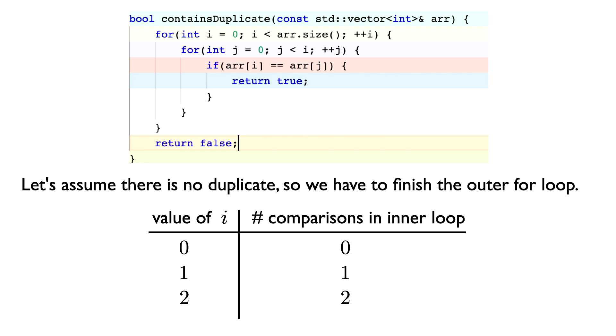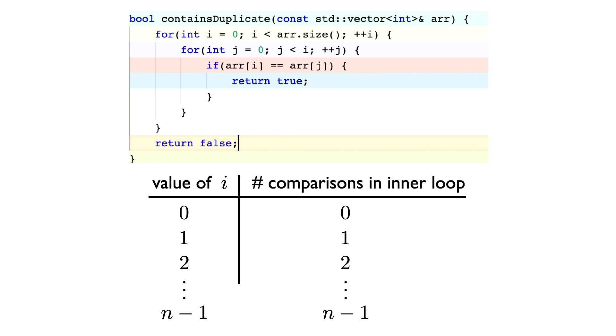When i is 1, we just do one comparison. When i is 2, we do two comparisons, with the element at index 0 and with the element at index 1. In general, we do a comparison for each value of j from 0 to i minus 1, so that's i comparisons in total. So now i ranges from 0 to n minus 1, where n is the total number of elements in our vector. So the total number of comparisons we do is the sum of all the numbers in the right column. That is the sum of the integers from 1 to n minus 1.